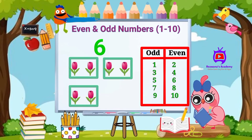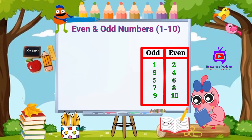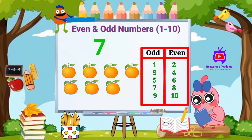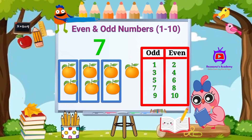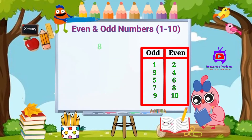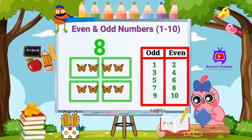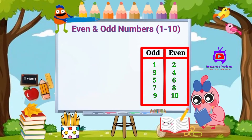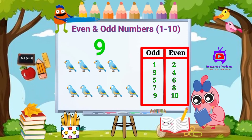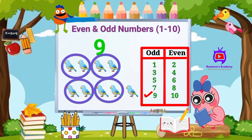Number seven — we have seven oranges here. Group them into twos — one is left alone, so seven is an odd number. Number eight — eight butterflies. Groups of two, nothing left, so eight is an even number. Number nine — nine birds. Groups of two, one is left, so nine is an odd number.